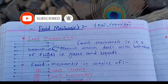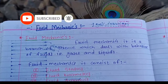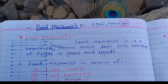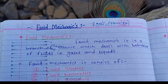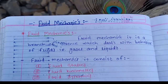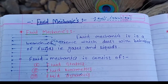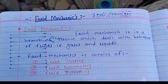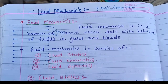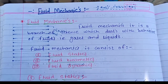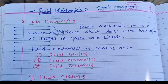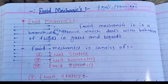What is fluid mechanics? Fluid mechanics is a branch of science which deals with the behavior of fluid, that is gases and liquids. Fluid mechanics consists of three parts: first, fluid statics; second, fluid kinematics; and third, fluid dynamics.